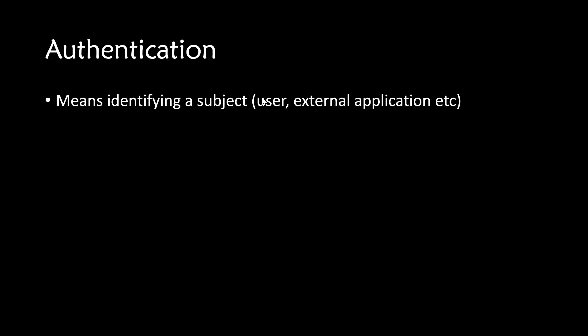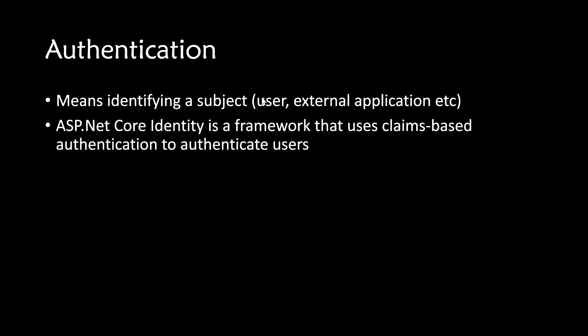Authentication means identifying a subject. A subject can be a user, an external application, or whatever. ASP.NET Core identity is a framework that uses claims-based authentication to authenticate users. So users are authenticated based on claims in .NET security frameworks. Let's try to understand the concepts of claims principle, claims identity, and claims using a very simple example.